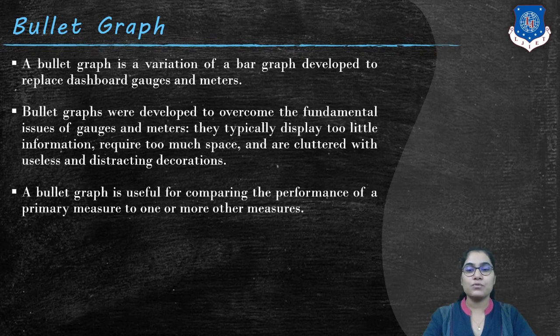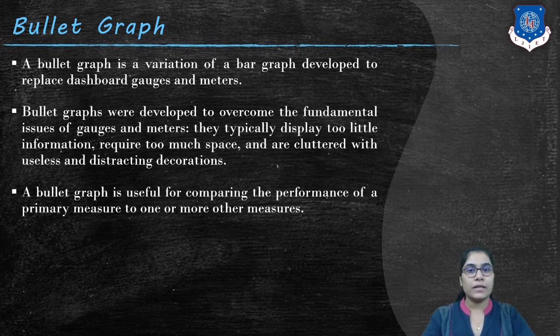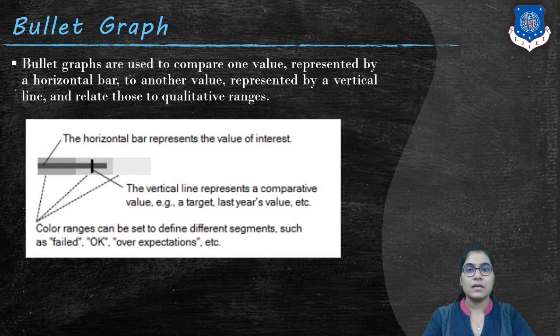A bullet graph is useful for comparing the performance of a primary measure to one or more other measures. So let's have a look at how the bullet graph appears.